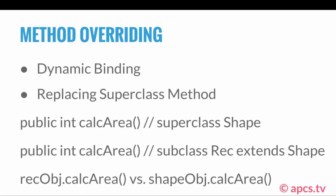If we have an object of the Rec class and we call the calcArea method, the computer will execute the method in the subclass. Versus if we have an object of the Shape superclass and call calcArea, it will execute the method in the superclass. Again, we have one method but two different behaviors — the subclass has replaced the existing code in the superclass and given its own code.